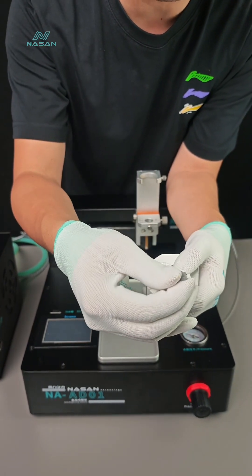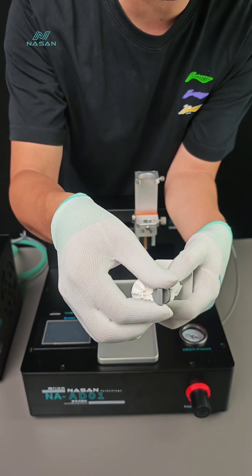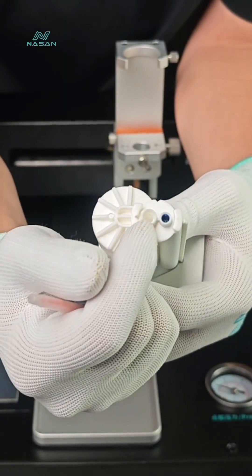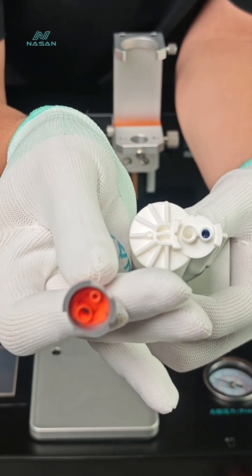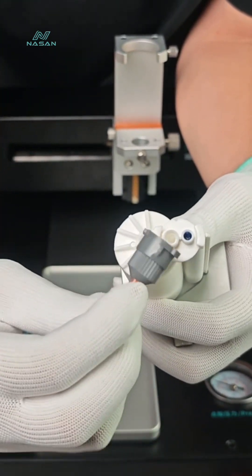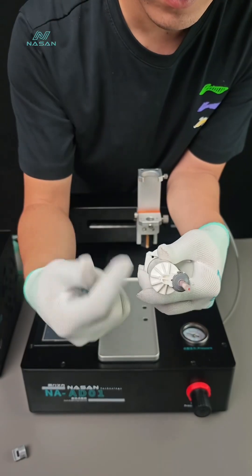And to install AB glue, unscrew the cap. We can see one big and one small hole. And on the mixing tube, it's the same. Match these two holes and lock them.